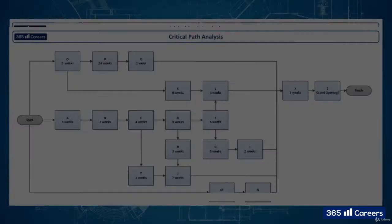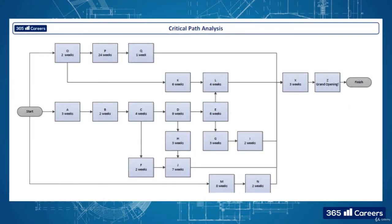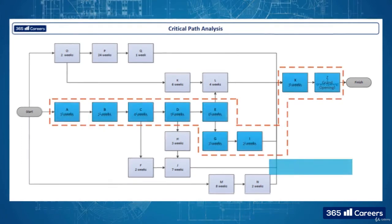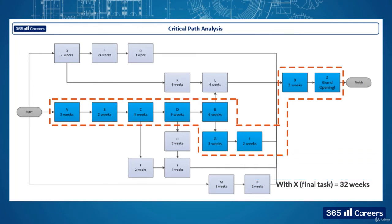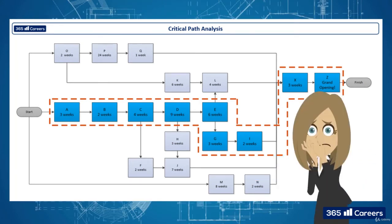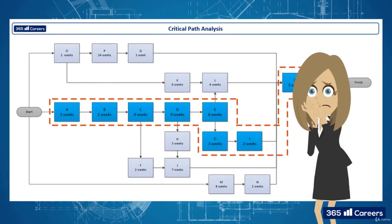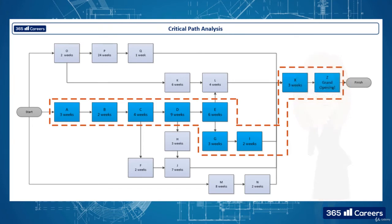There we have it. As you can see, A through to I is the longest stream. This is the path you will need to be the most vigilant with, as any delay here will postpone the whole project. This is the critical path.